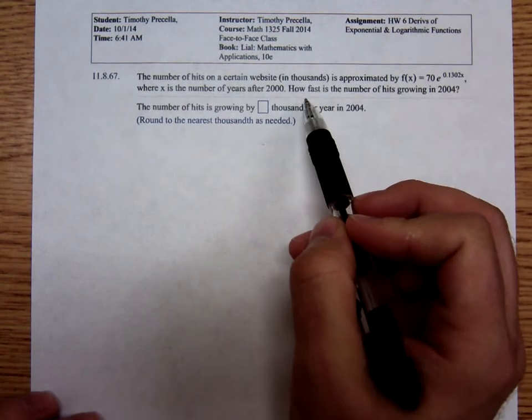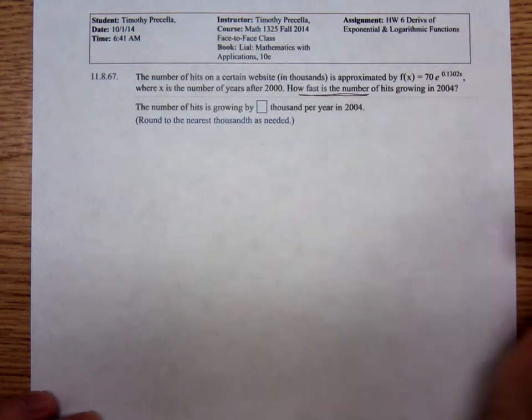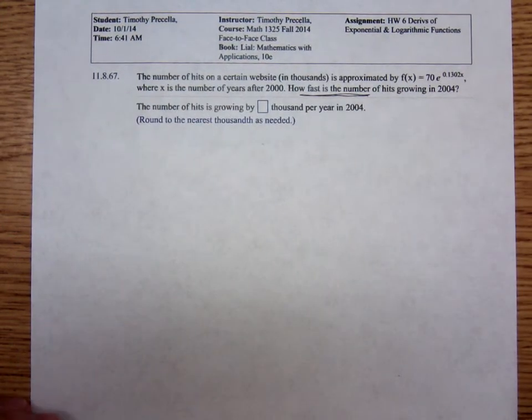How fast is the number of hits? That's asking for a rate of change. To find a rate of change, we're going to have to differentiate.